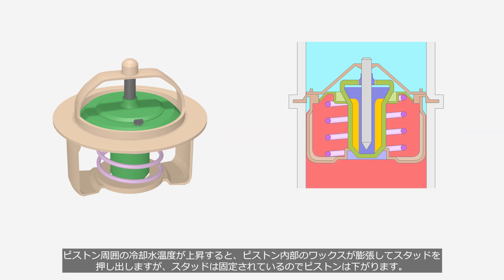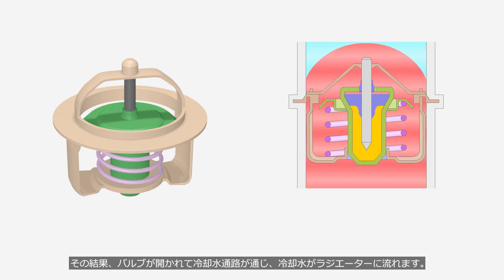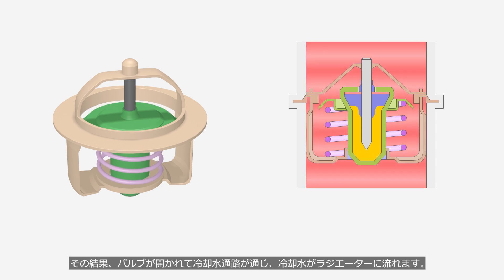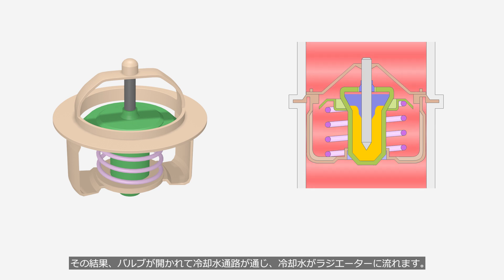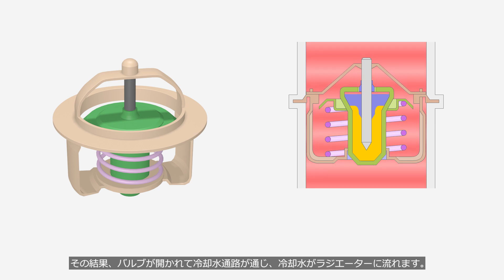When the coolant temperature around the piston rises, the wax inside the piston expands and pushes out the stud. However, since the stud is fixed, the piston moves downward. As a result, the valve opens and the coolant passage is opened, allowing the coolant to flow into the radiator.